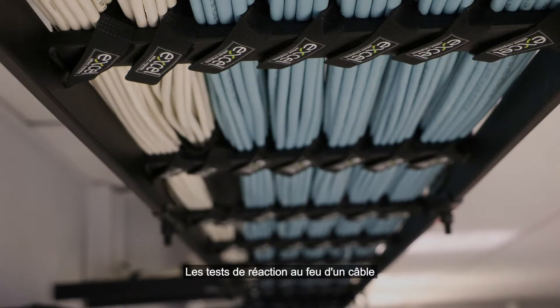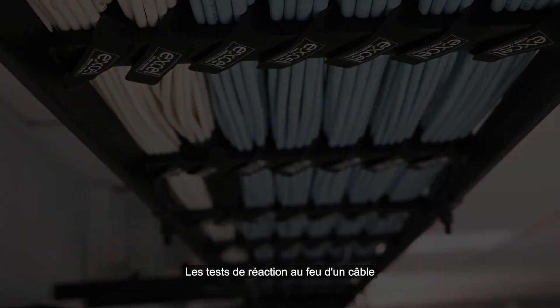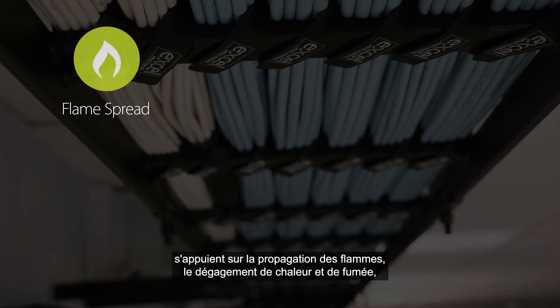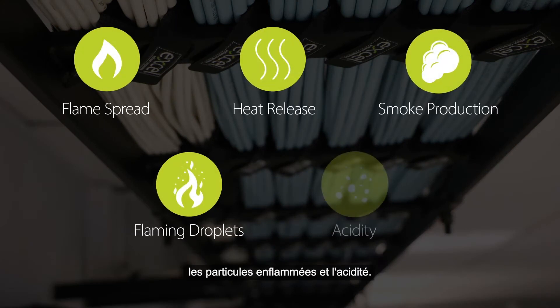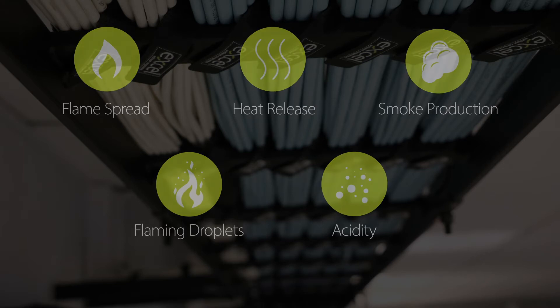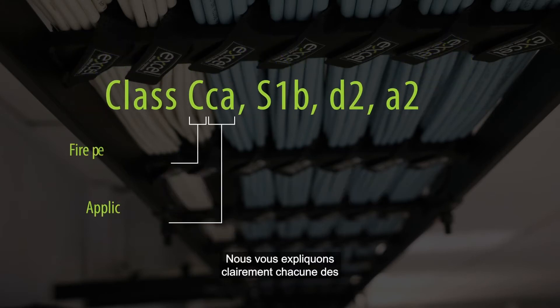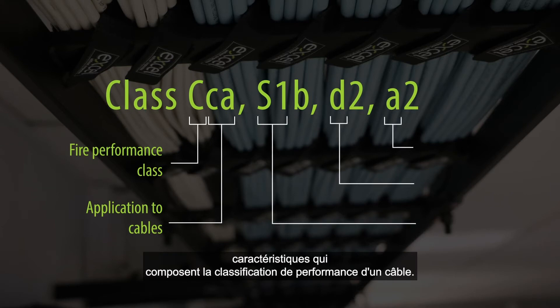Performance tests on a cable's reaction to fire are based on flame spread, heat release, smoke production, flaming droplets and acidity. In this chapter we provide clear explanations for each of these characteristics which make up a cable's performance classification.